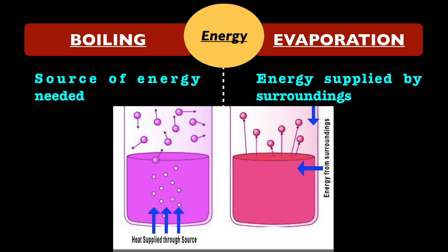Energy: for boiling to happen, a source of energy is needed. For example, we use an LPG cylinder gas kit as a source to boil water. For evaporation, the energy is supplied by the surroundings, which includes natural sources like sunlight, heat, etc.